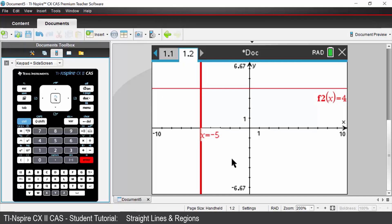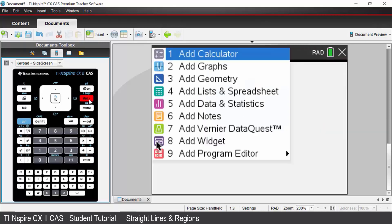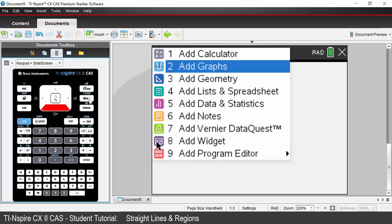We will now graph some regions. So we're going to open up a new graphs application. So control and then doc which is add a new page. We're going to insert a new graphs application.